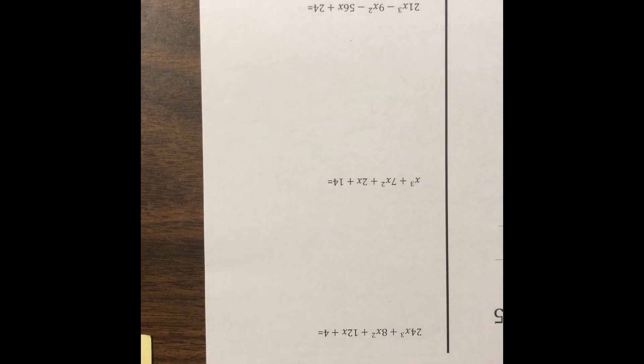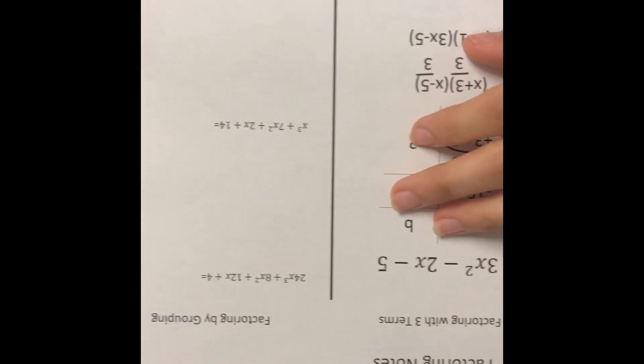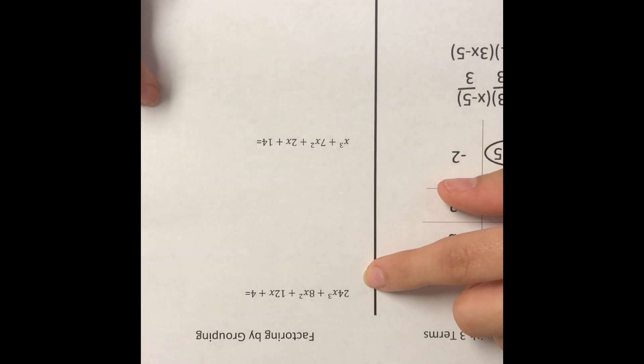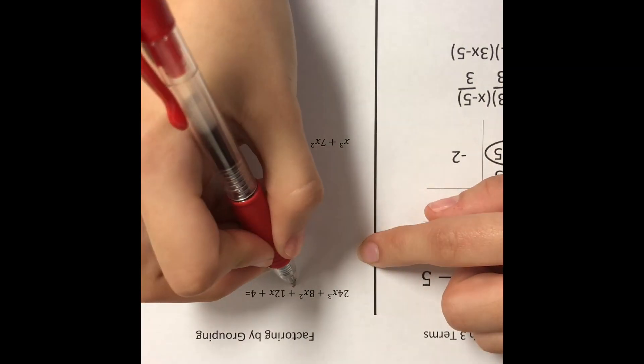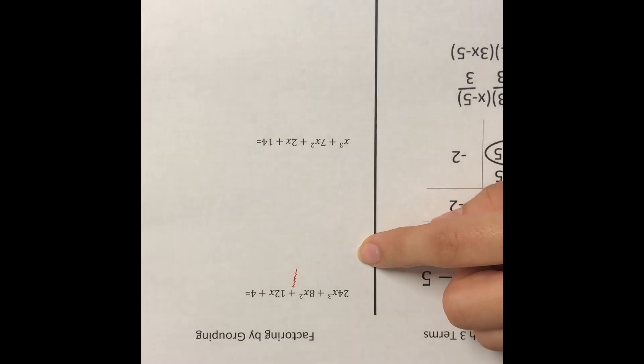All right, so what we are going to be doing today is factoring by grouping. So let's take a look at the first one. What we want to do first is separate the idea that we have two separate parts to it. We are going to divide it right here.